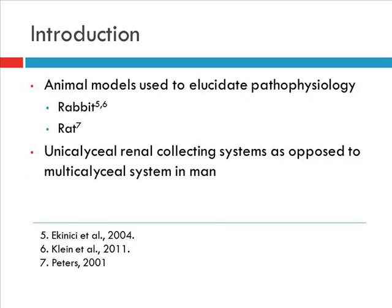To further understand the etiology of this obstruction, animal models are frequently used to try and illustrate the pathophysiology of this entity. However, the majority of animal models are smaller mammals such as rabbits and rats, which have unicollecting renal systems. However, in man, we have a multicollecting system.